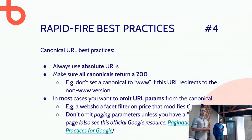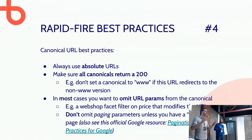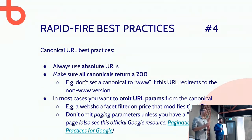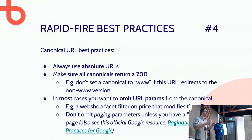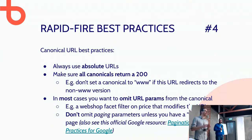Best practices for canonical tags: always use absolute URLs. Always make sure your canonical URLs return a 200 status code. Very often we see that a website is located at www.domain.com but the canonical tag skips the 'www' and points to domain.com, which then redirects back to www. So we're giving wrong information to Google by pointing to a URL that redirects away. Really check your own websites today — look at the canonical tag and verify it returns a 200 status code.